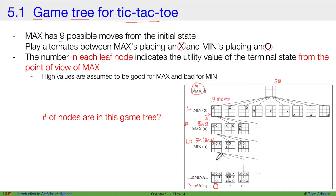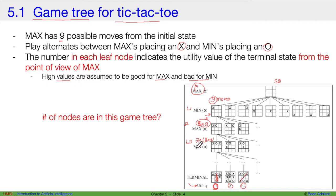For example, a game ending with three O's in a row is very bad for max, giving a utility score of -1. A game with three X's in a row is a win for max, giving +1. A draw gives 0. High values are good for max and bad for min. The total number of nodes in the game tree is 9 + (8×9) + (7×8×9) and so on.